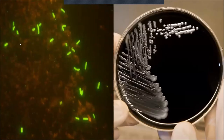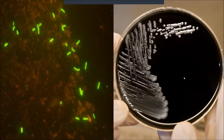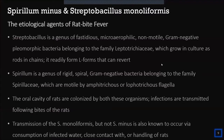On the left, you can see a respiratory tract sample stained with a fluorescent antibody label, with organisms fluorescing brightly. On the right, you can see BCYE agar — black in color because of the charcoal — showing ground glass appearance colonies.